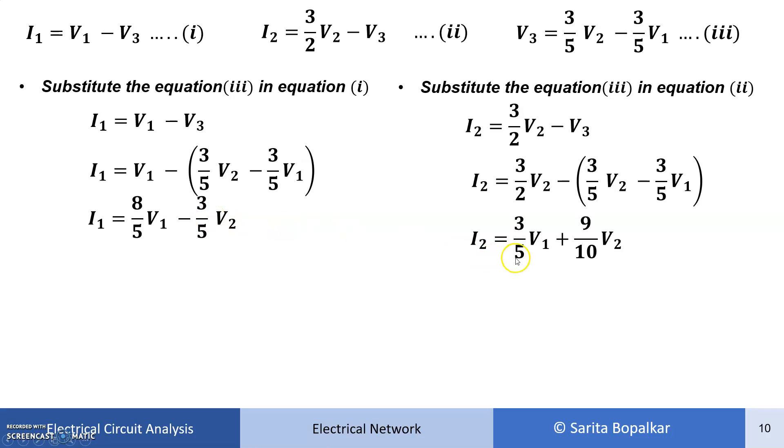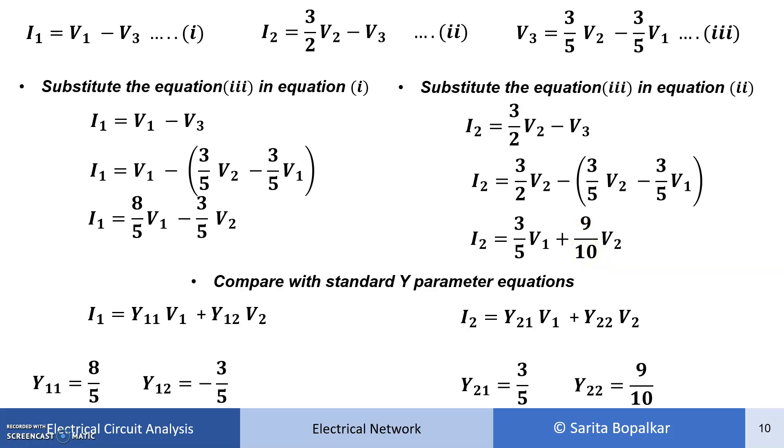Now we can compare these two equations with our standard Y parameter equation. We can compare these equations. I1 is a function of V1 and V2. So Y11 is 8 by 5 and Y12 is minus 3 by 5. Similarly, Y21 is 3 by 5, Y22 is 9 by 10. So these are our Y parameters.